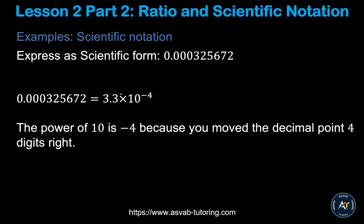For decimal numbers, the process is similar. Find the first non-zero digit and place the decimal after it. For example, 0.00033 — the first non-zero digit is 3, giving 3.3 times 10 to some power. When you have a decimal, count from right to left instead of left to right. Counting gives you 4 places, and since you moved left, you use a negative exponent: 10 to the power of negative 4.